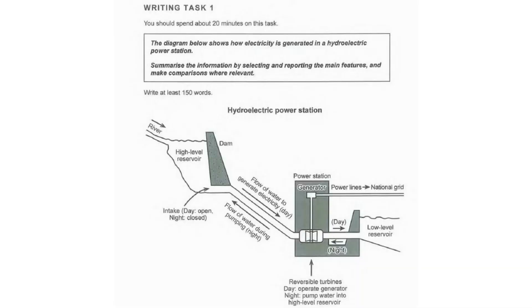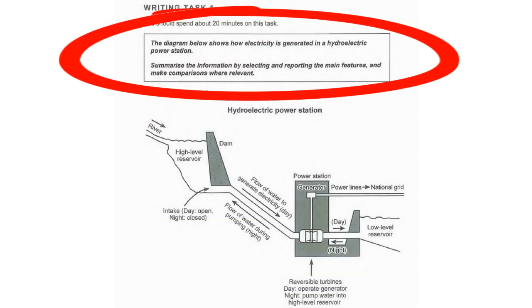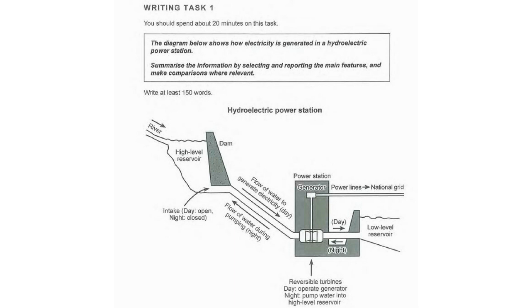Let's look at this process chart. It's about a hydroelectric power station. The prompt reads: 'The diagram below shows how electricity is generated in a hydroelectric power station. Summarize the information by selecting and reporting the main features and make comparisons where relevant.' Selecting and reporting the main features means you should choose the most important things, because there are too many details and covering all of them would mean writing too many words, which is not advised in IELTS.